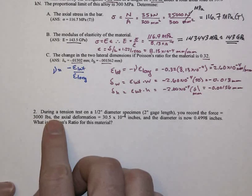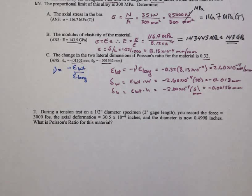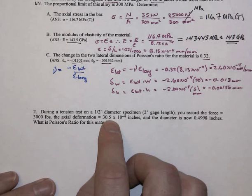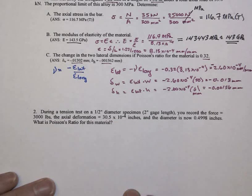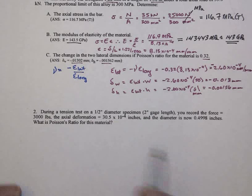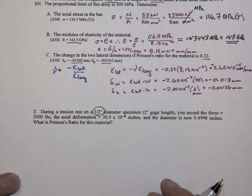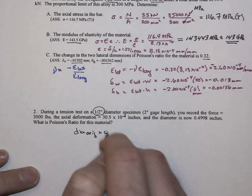One last example for the Poisson effect: we have a tension test on a half-inch diameter specimen, 2 inches of gauge length. And we record a force of 3,000 pounds with an axial deformation of 30.5 times 10 to the minus 4th inches. And now the diameter is 0.4998. In reality, a half-inch diameter specimen, if it's standard, will actually be 0.502 inches in diameter. However, we're going to just use what's given to us in the actual problem statement.